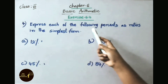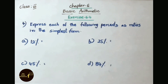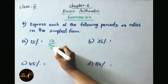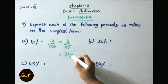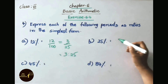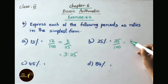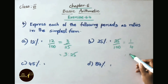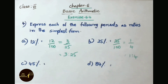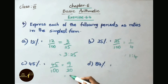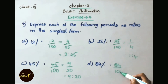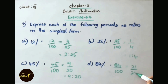Question 4: express each of the following percents as ratios in the simplest form. A: 12 percent equals 12 by 100; 4 threes are 12 and 4 twenty-fives are 100, so the answer is 3 is to 25. B: 25 percent equals 25 by 100; simplified to 1 by 4, so 1 is to 4. C: 45 percent equals 45 by 100; 5 nines are 45 and 5 twenties are 100, so 9 is to 20. D: 84 percent equals 84 by 100; 4 twenty-ones are 84 and 4 twenty-fives are 100, so 21 is to 25.